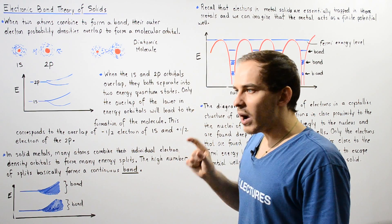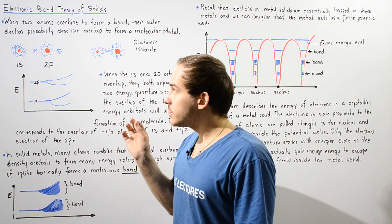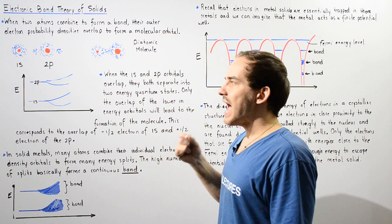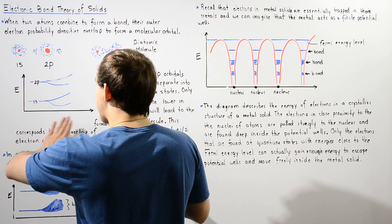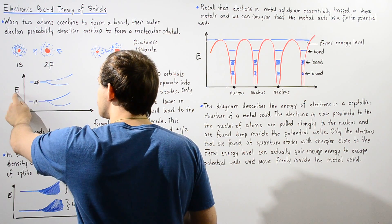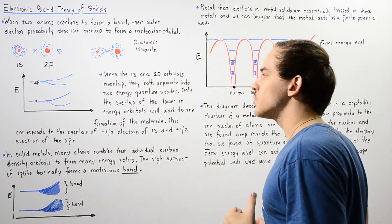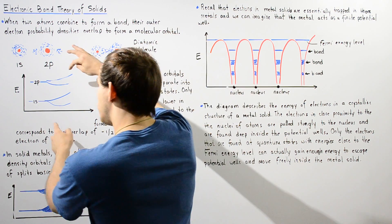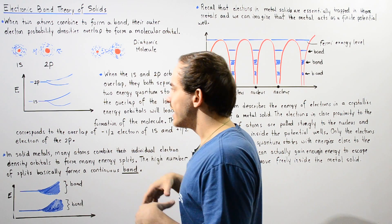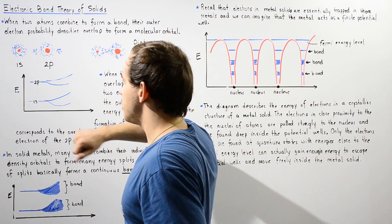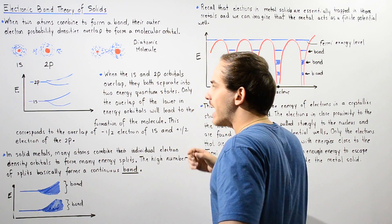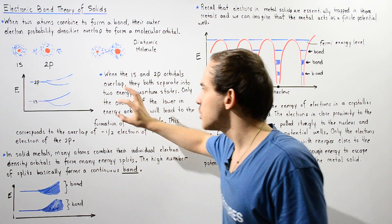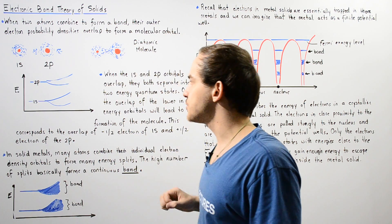Also recall that when the 1s atomic orbital combines with the 2p atomic orbital, the two atomic orbitals of our two individual atoms actually split energies. In the diagram, the y-axis is energy and the x-axis represents the separation distance. As we move to the right, the separation distance between the 1s and 2p atoms decreases. Initially, the 1s orbital is lower in energy than the 2p orbital.